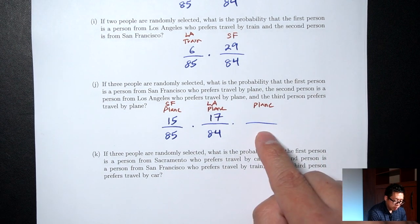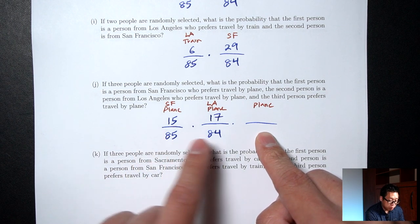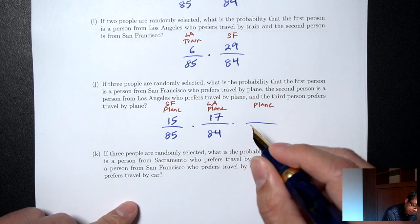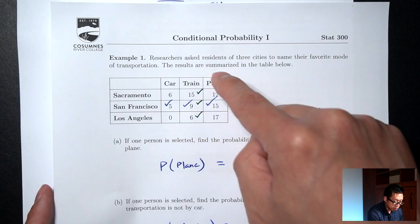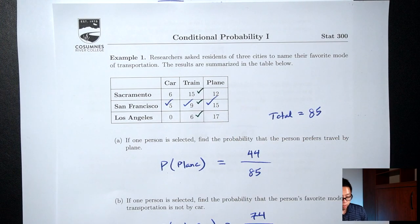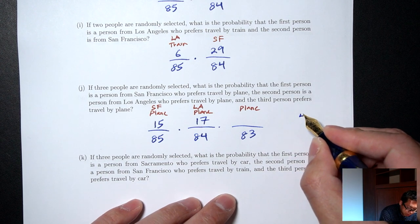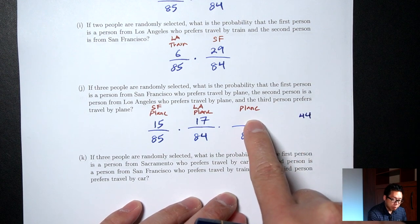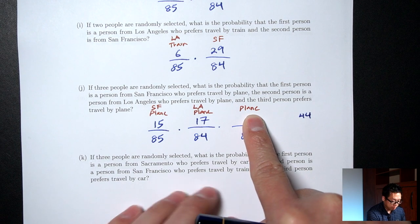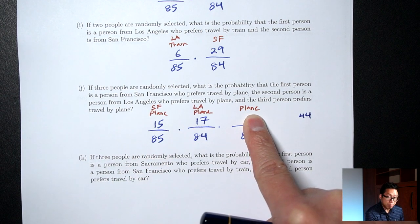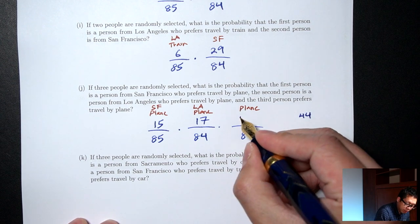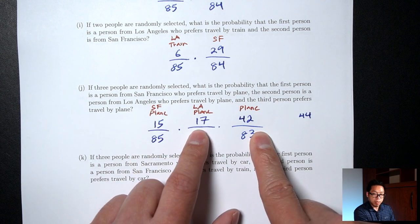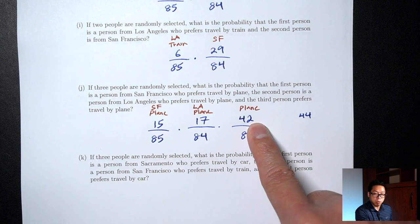For the third fraction's top, plane in general is 12 plus 15 plus 17 equals 44. But have we used any plane numbers? Yes — first person was plane (SF plane) and second person was plane (LA plane), so we've used two plane numbers already. We have to reduce by two to 42. So the answer is 15/85 times 17/84 times 42/83.